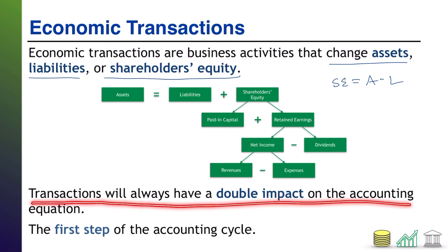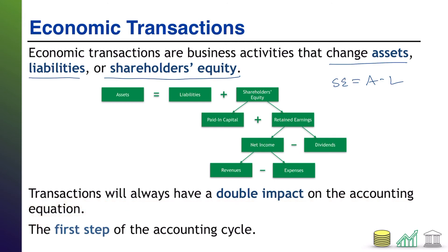Something to keep in mind: transactions will always have a double impact on the accounting equation. What does that mean? Remember, A equals L plus SE — you can't move one without moving something else. For example, if assets go up, that would throw the equation out of balance without some countering effect. There are three possible countering effects: liabilities also go up; or equity goes up; or one asset went up while another asset goes down. No matter what, every single economic transaction must have a double impact on the accounting equation in order to keep it in balance. And as mentioned at the start, this is the first step of your accounting cycle — the company conducts an economic transaction.